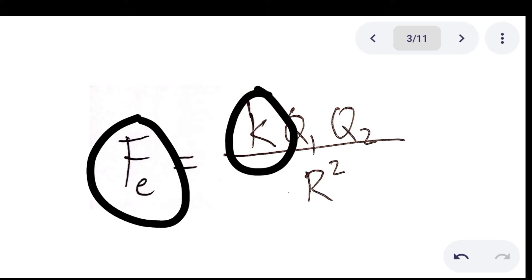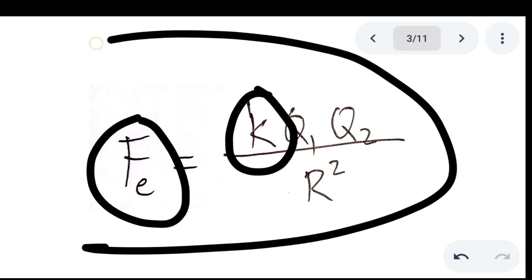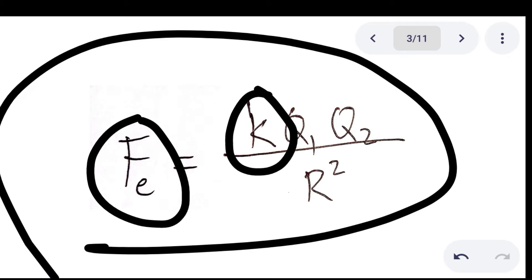This electric constant is similar to the gravitational constant because the equation is similar to the gravitational formula — the law of gravitational attraction. The electric constant is considered an important universal constant.